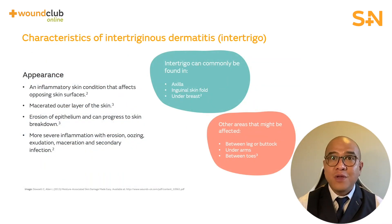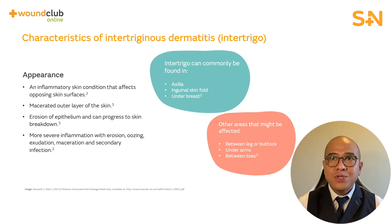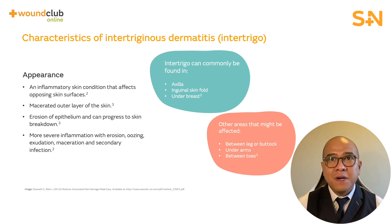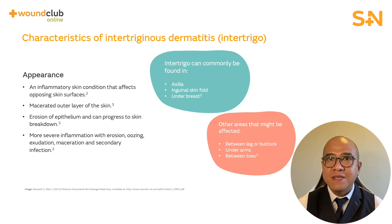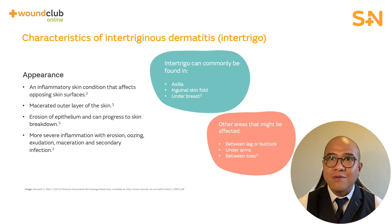Intertrigo can be found at the axilla, inguinal skin folds, and under the breast. You will also find this type of skin damage between the legs or buttocks, underarms, and between the toes. It can appear as a macerated outer layer of the skin and can progress to skin breakdown.